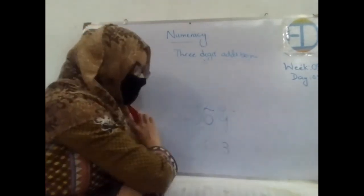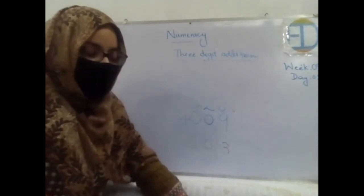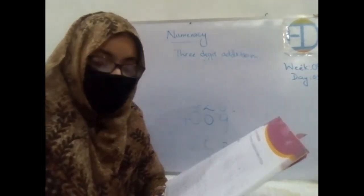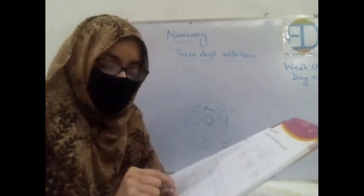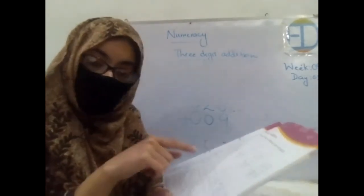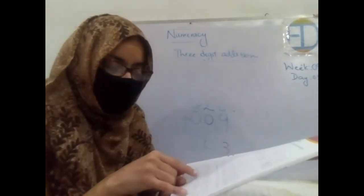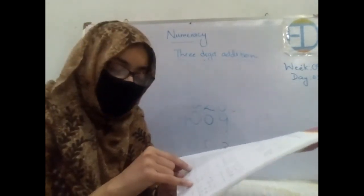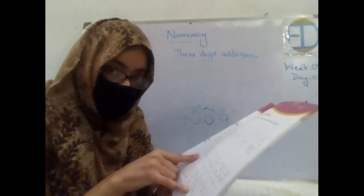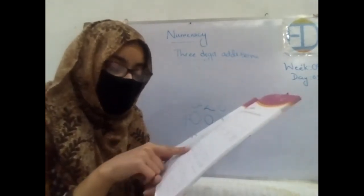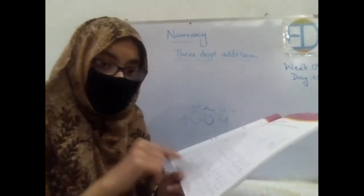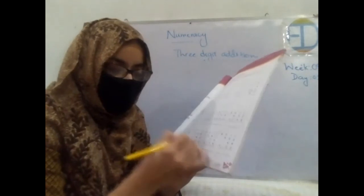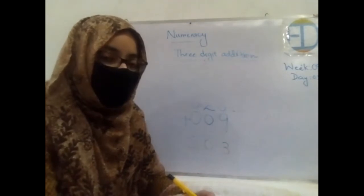Now solve the next one: 226 plus 145 plus 68. Start from the ones column — 8 plus 5 equals 13, plus 6 equals 19. Write 9 below the ones column and carry 1 to the tens column. Then 6 plus 4 equals 10, plus 2 equals 12, plus the carried 1 equals 13. Write 3 and carry 1. Then 2 plus 1 equals 3, plus the carried 1 equals 4. The answer is 439.